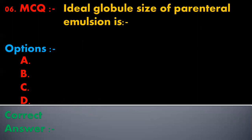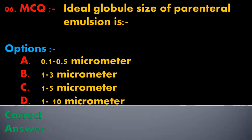The sixth multiple choice question is: the ideal globule size of parenteral emulsion is — options are 0.1 to 0.5 micrometer, 1 to 3 micrometer, 1 to 5 micrometer, or 1 to 10 micrometer. The correct answer is 1 to 5 micrometer. The ideal globule size of parenteral emulsion is 1 to 5 micrometer.